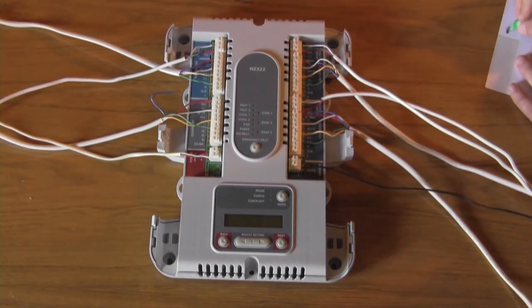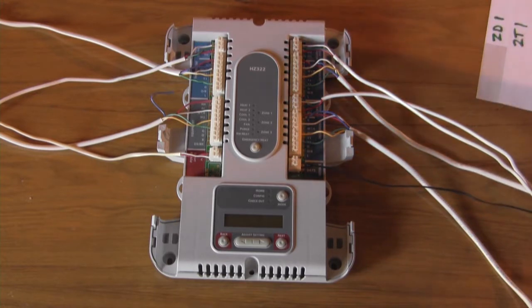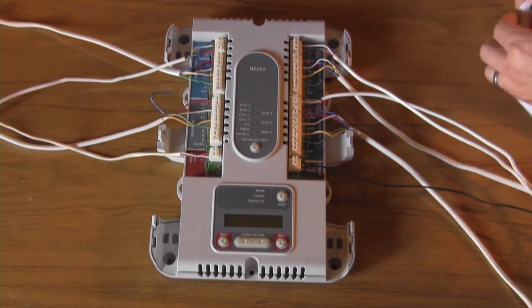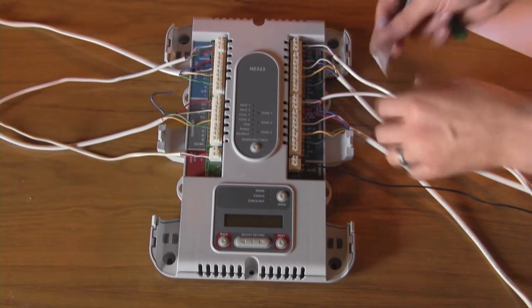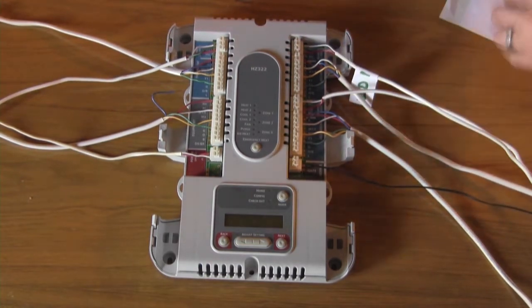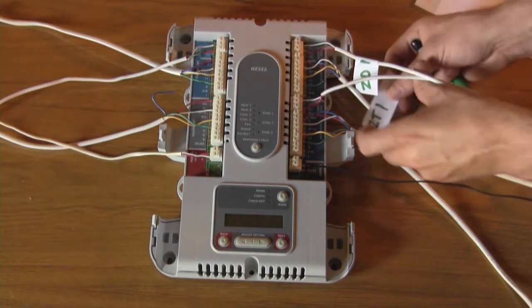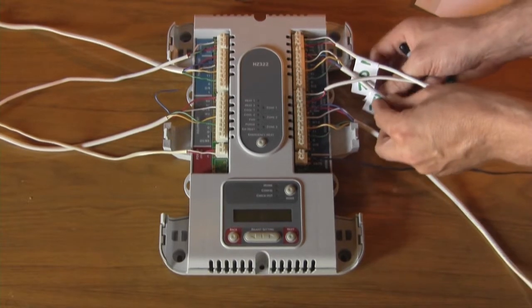So we'll make some labels here and begin to label these up. These don't have to be permanent labels, just until we get to the wiring of the SmartZone board. They'll help us not forget which is which.